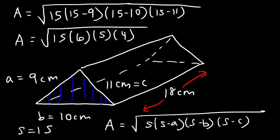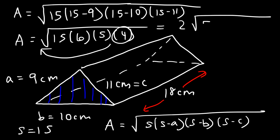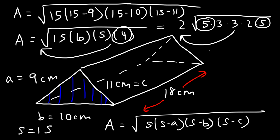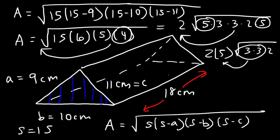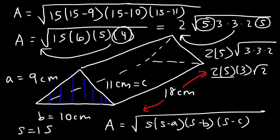So now we simplify what we have inside the square root. We can take the square root of 4, which is 2. We write 15 as 5 times 3, and 6 as 3 times 2. We can take out 25 — the square root of 25 is 5 — and the square root of 9 is 3. So we're left with 2 times 5 times 3 times the square root of 2. 2 times 5 is 10, 10 times 3 is 30. So the area is 30 square root of 2. I verified that with a calculator and got the same answer.